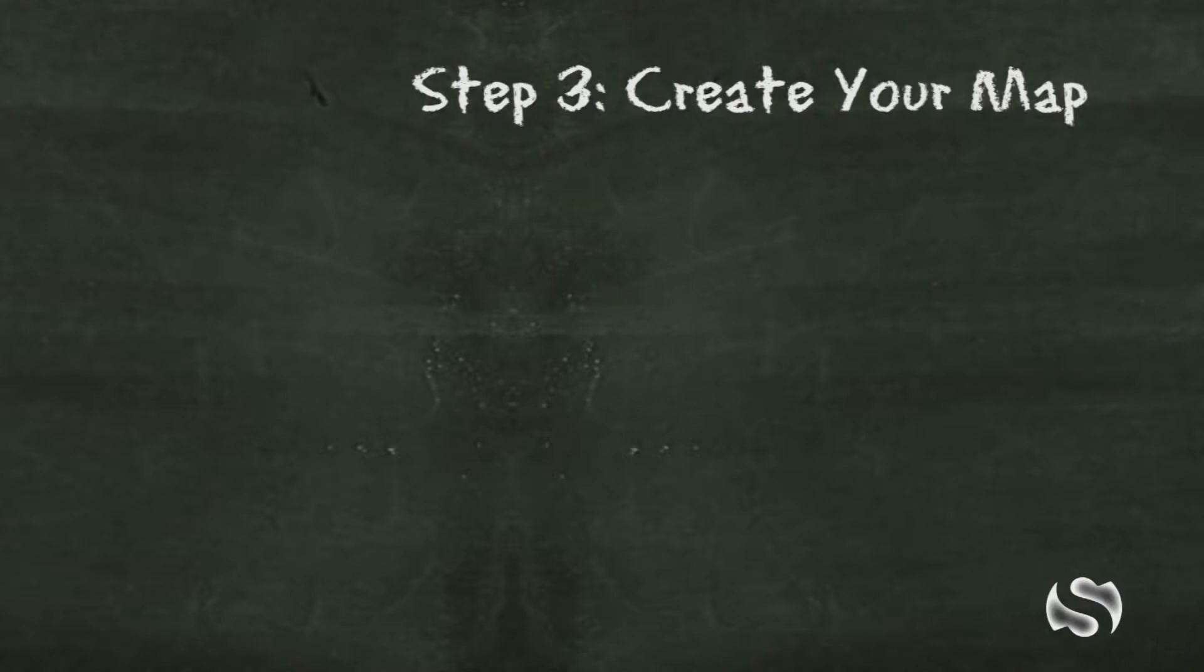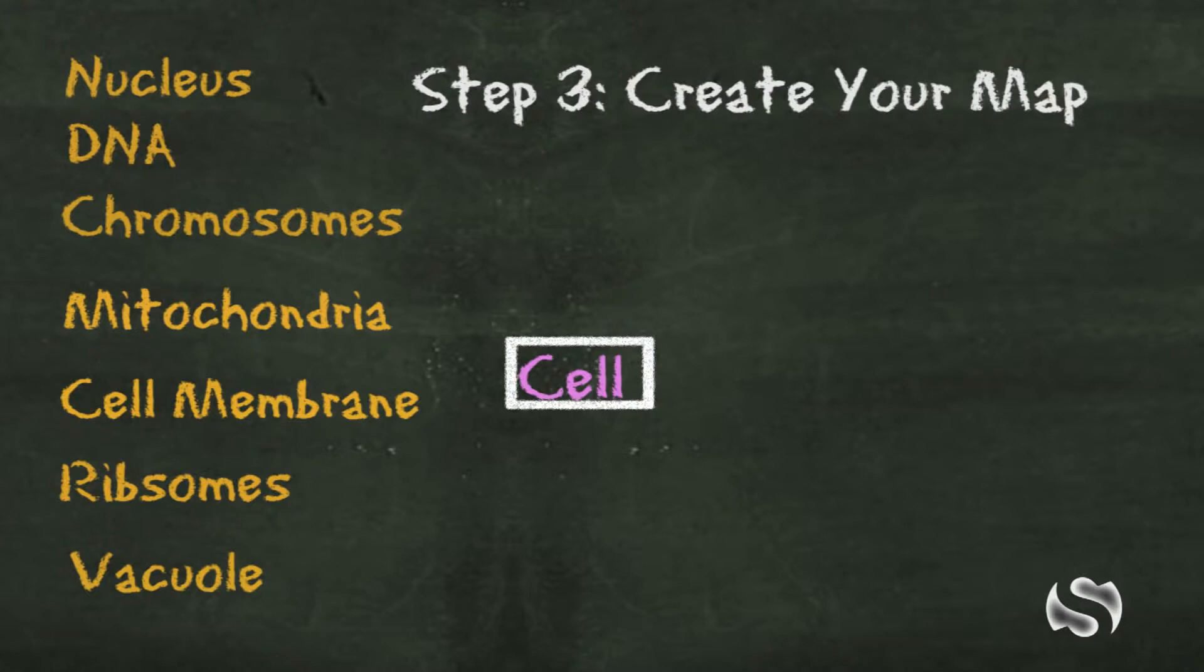The third step is you're going to actually start creating your map. So you already have your key idea in the center in a box and you're going to make connections from there. So you're going to use your key term list and you're going to go one by one through each key term connecting it in some way to the main idea in the center.